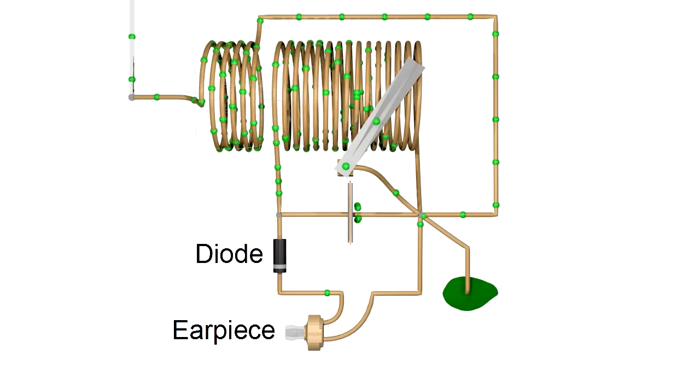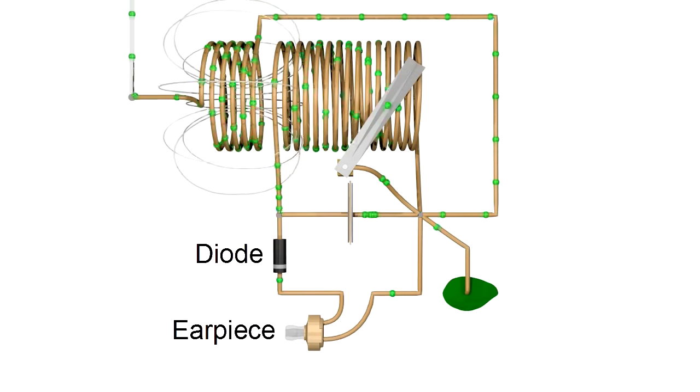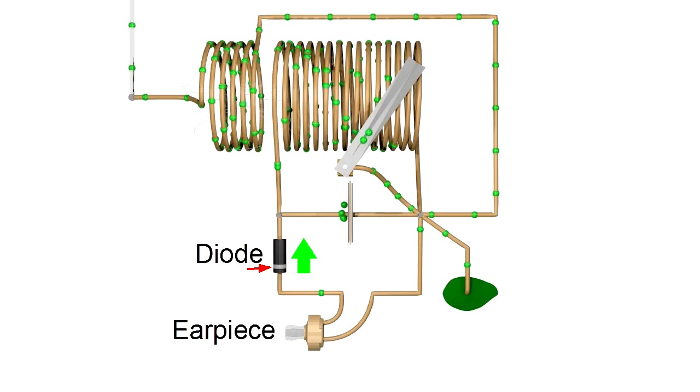The next parts are the diode and the earpiece. Notice that together they're both connected to either plate of the capacitor. What's special about the diode is that it allows electrons to flow in one direction only, in this direction. You can tell which direction because of the line drawn nearer one end.